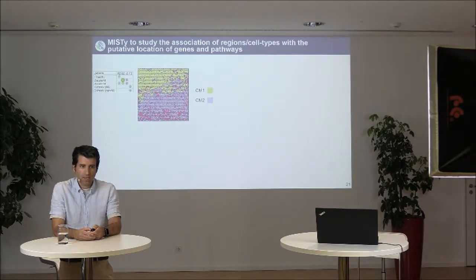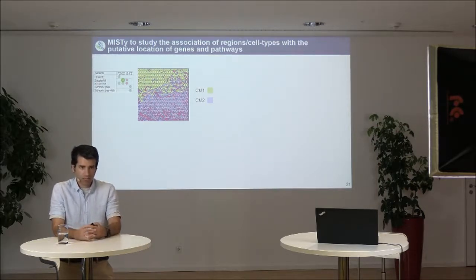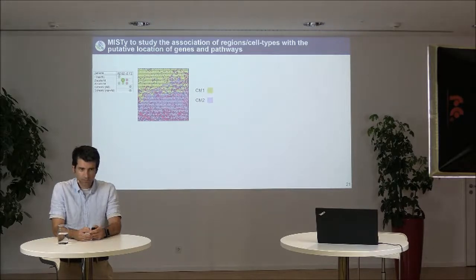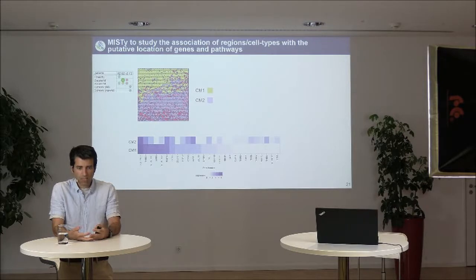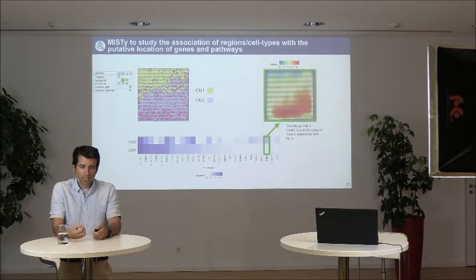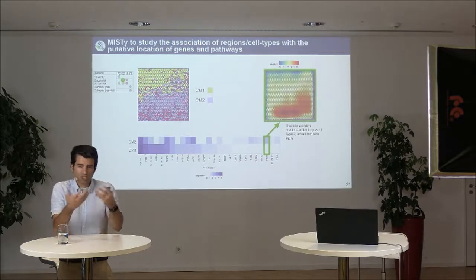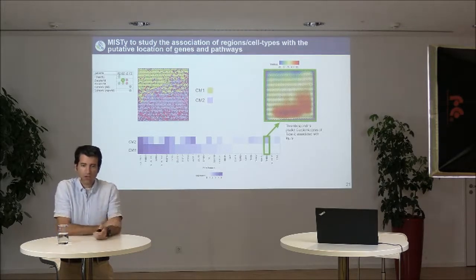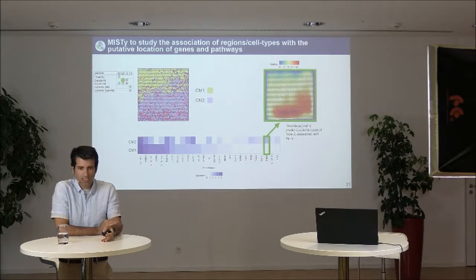As an example applying this approach to a border zone tissue in acute myocardial infarction, we found two types of cardiomyocytes — shown in yellowish and magenta colors. We applied this multi-view approach and found that the presence of thrombospondins is very predictive of cardiomyocyte subtype 2, which we had seen to be associated with the ischemic zone. This is predictive in a machine learning sense — not necessarily causal — but we thought it was interesting.